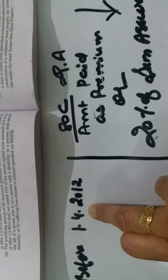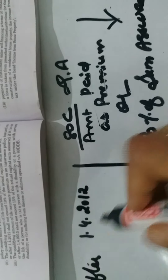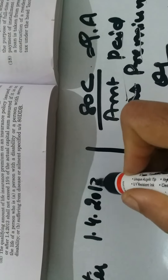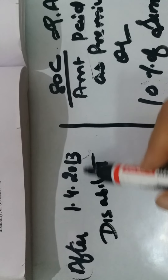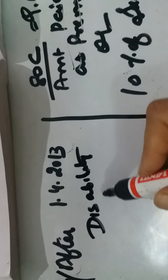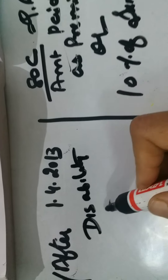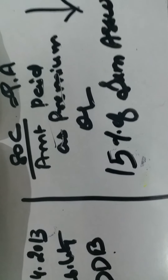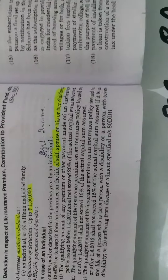After 1st April 2012, the rule remains the same but the percentage changes from 20% to 10% of sum assured. Then there is another date — 1st April 2013 — but this applies only to persons who have a disability or specified diseases covered under Section 80DDB. For these persons, the qualifying percentage is 15% of sum assured. The rule is the same; only the percentage changes.